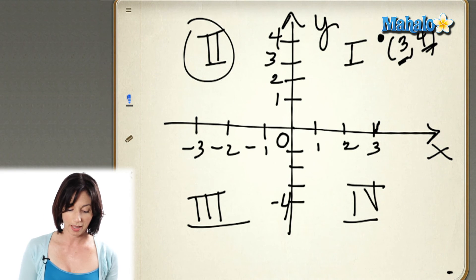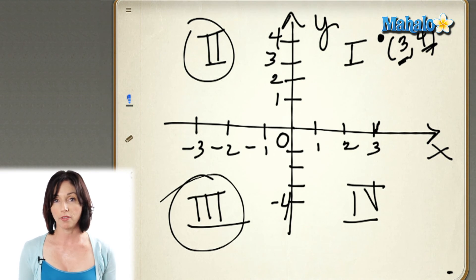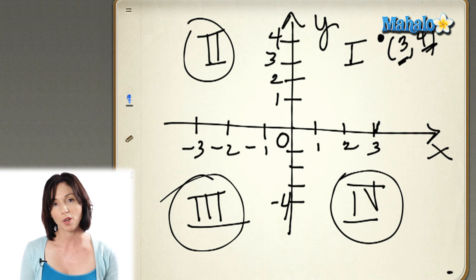If both values are negative, that'll be down here in quadrant 3. And if the x value is positive, but the y value is negative, you'll find them down here in quadrant 4. And that's basically it.